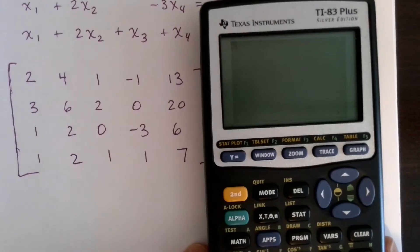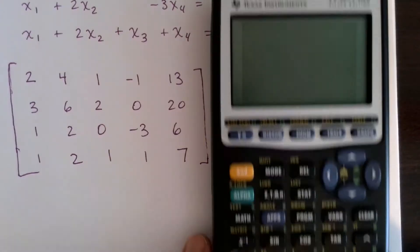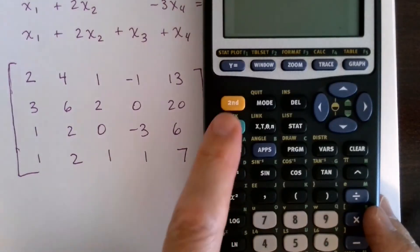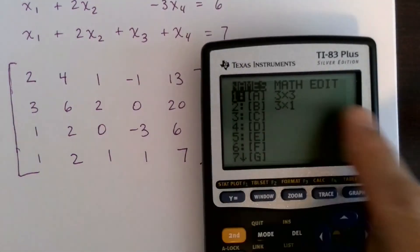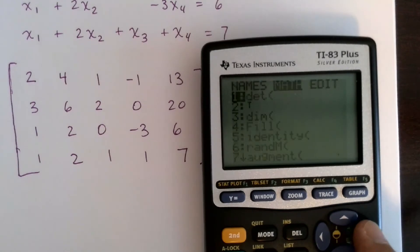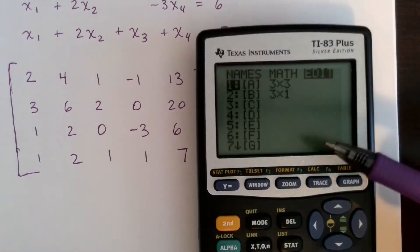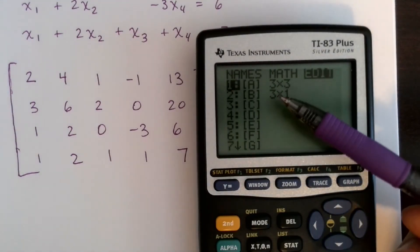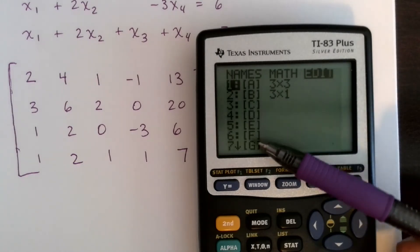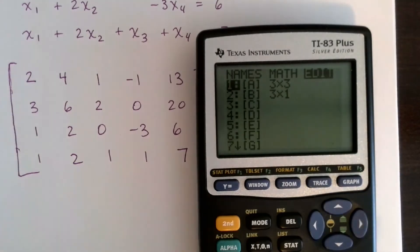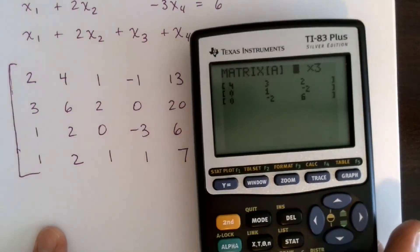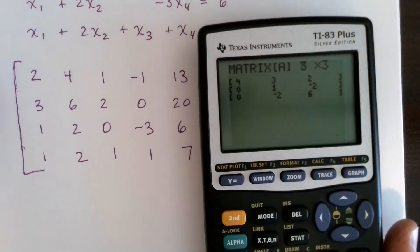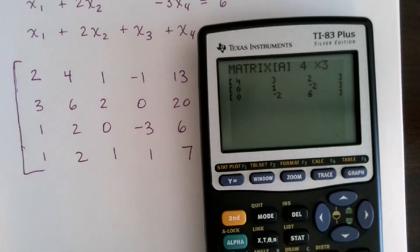I'm going to use the TI-83 in this example — the 84 is very similar. Go to the matrix menu: second, matrix. You'll see names, math, edit — scroll to the right to edit. You may have some matrices already defined. I'm going to use matrix A, so I'll hit enter on it.